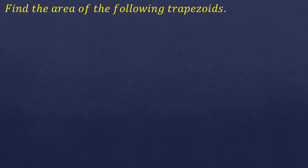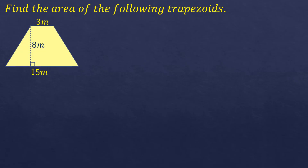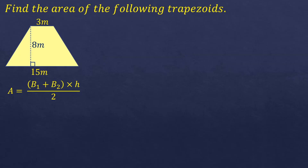Next, find the area of the following trapezoids. The formula for finding the area of a trapezoid is B1 plus B2 times height divided by 2. B1 and B2 can be interchanged — it won't affect the answer. Usually B1 is the longer base and B2 is the shorter base.